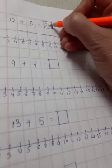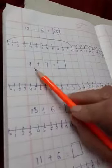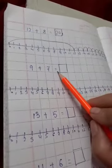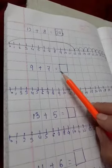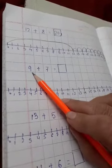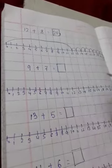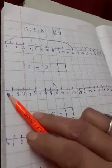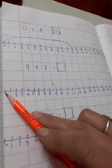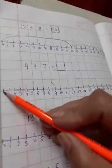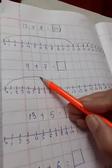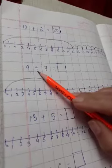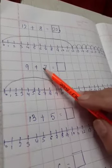Now next sum is 9 plus 7 equal to box. So firstly we will go to number 9 and here is number 9. So we will do the long jump from 0 to 9, 0 to 9, ok. And then we will add it, plus 7.